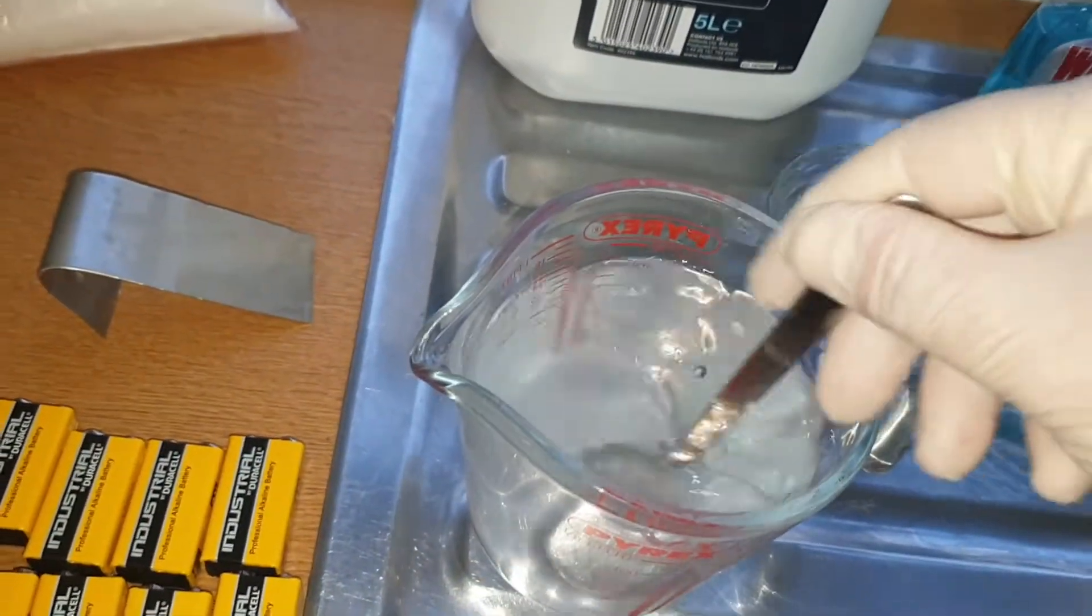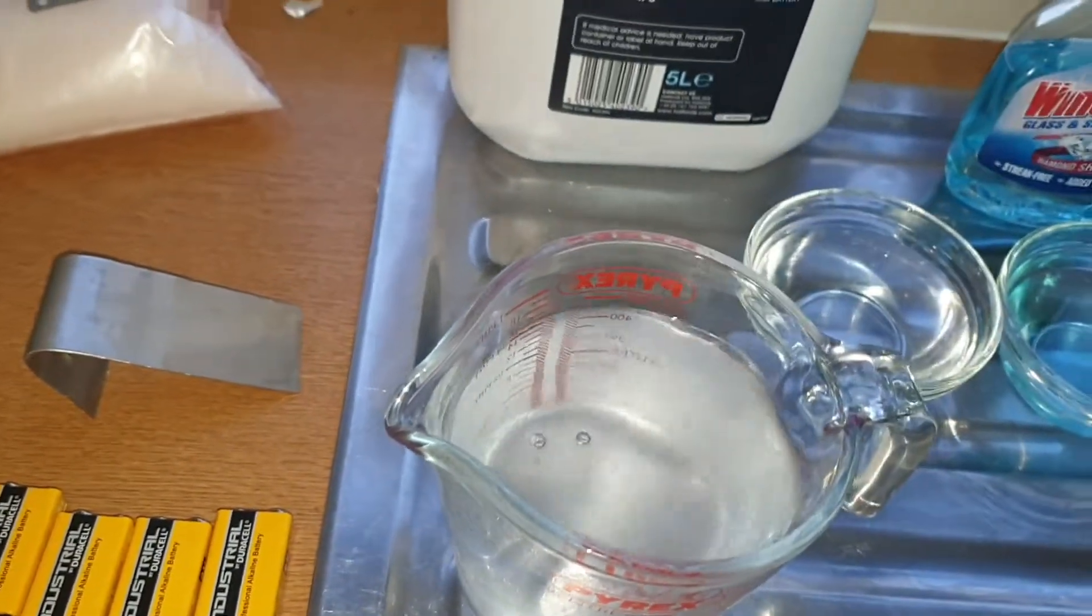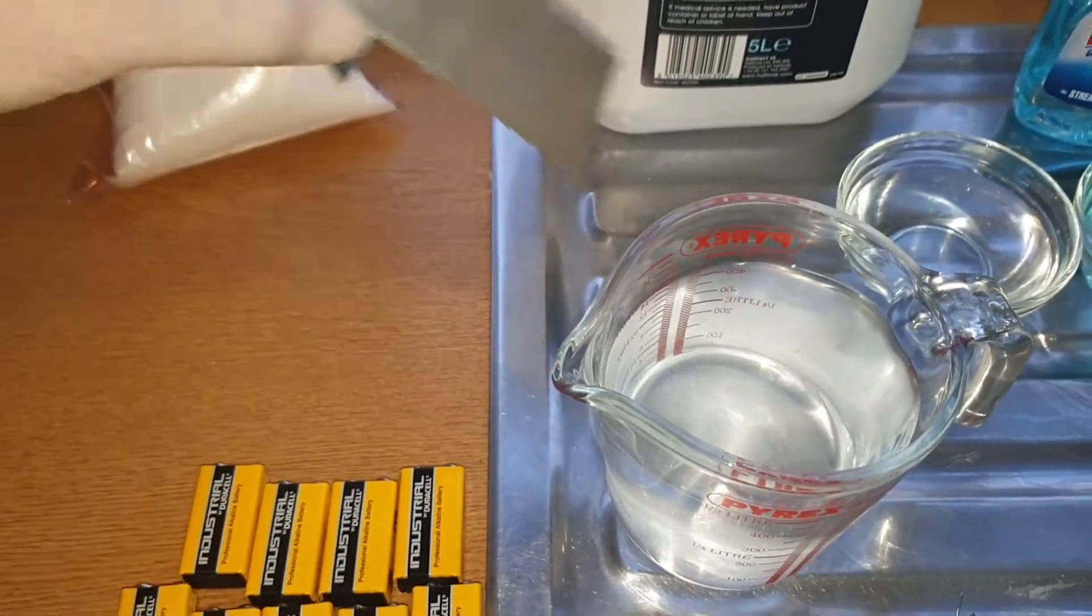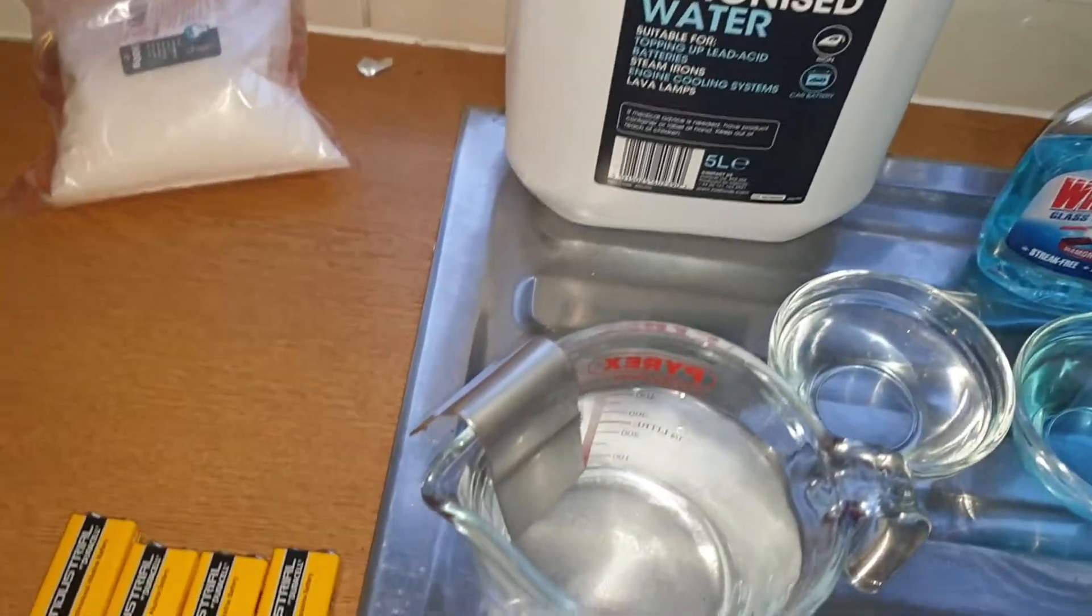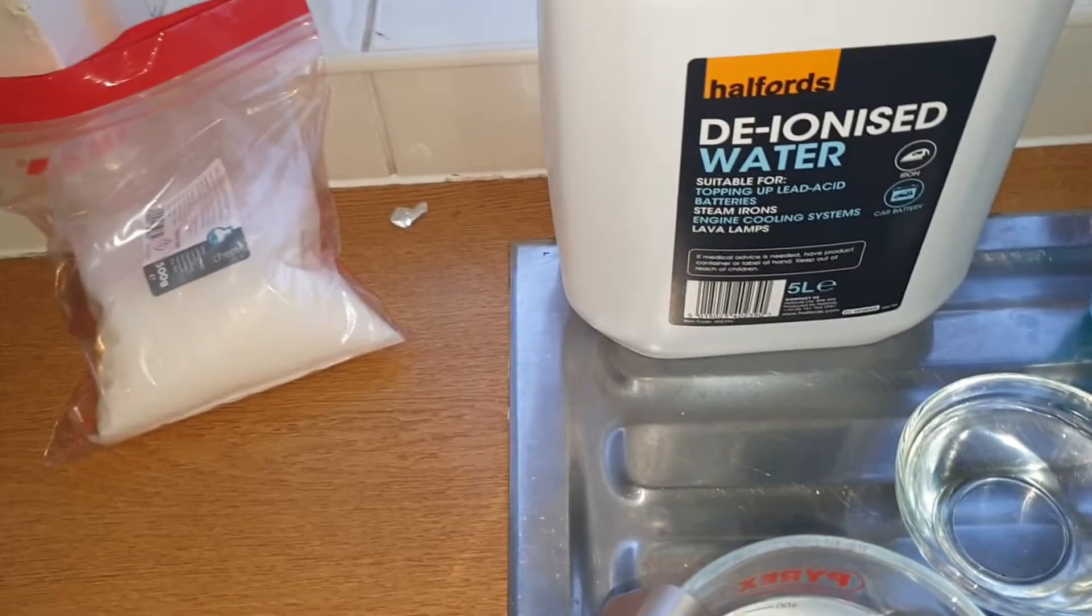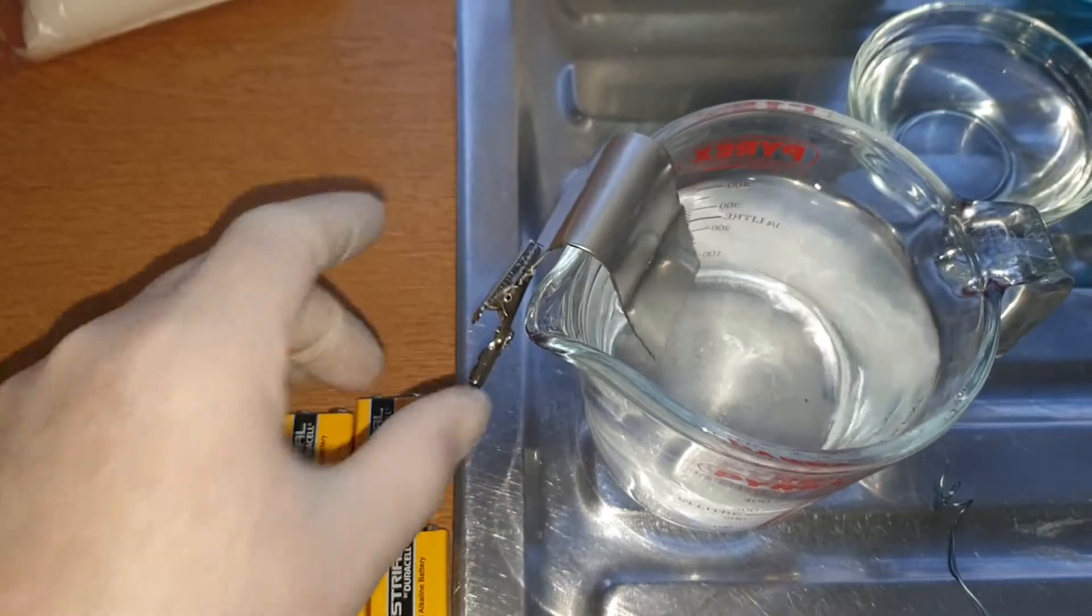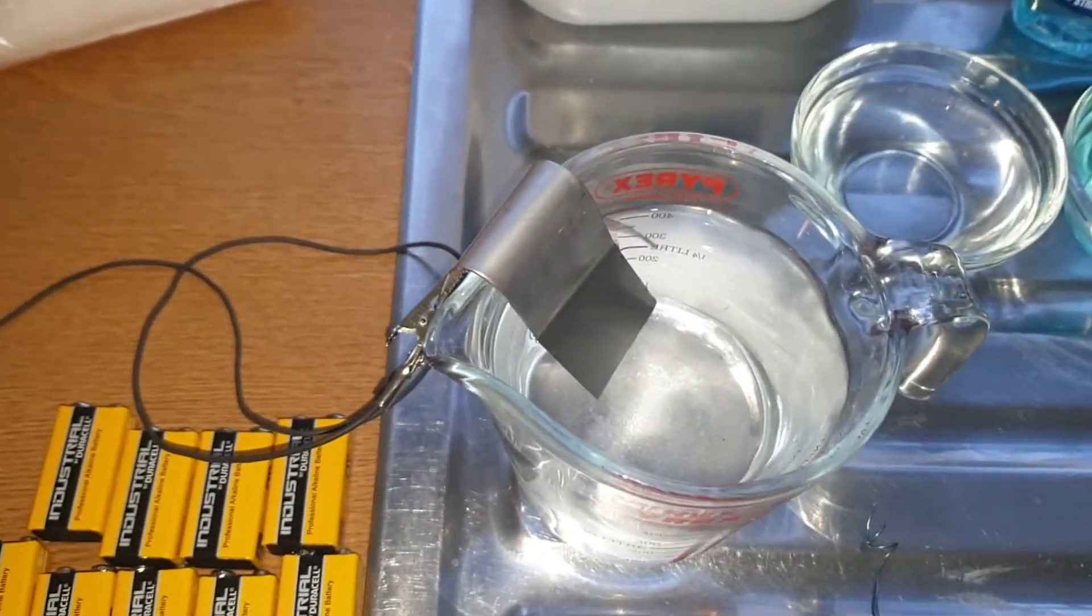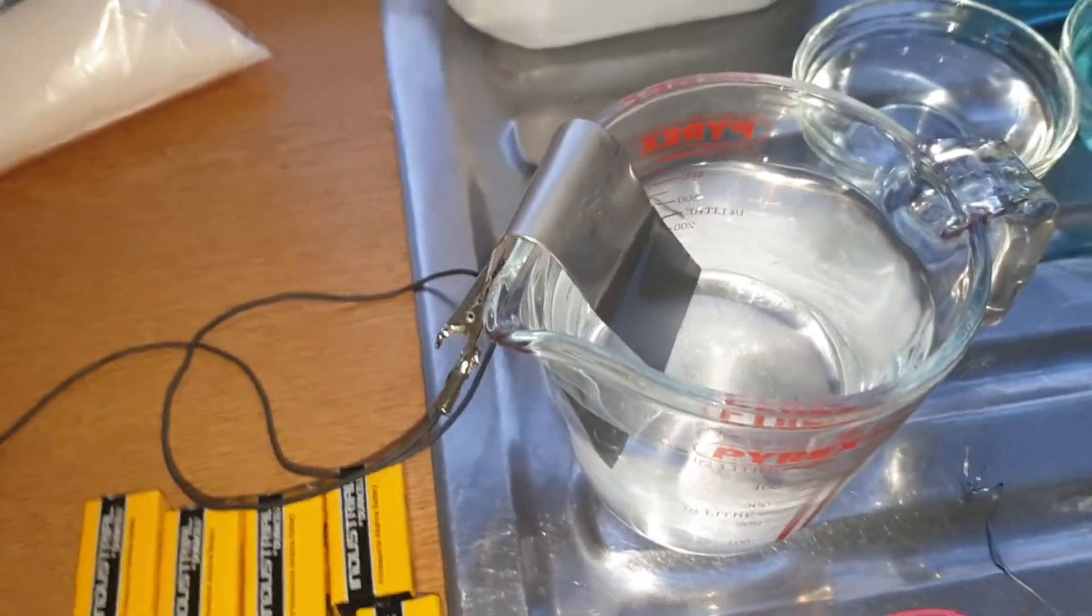Give it a mix. Take our stainless steel plate, pop it down the side, and take our black negative lead and clip that on. I'm going to try and put this on some sort of stand so you can see what we're going to do next.